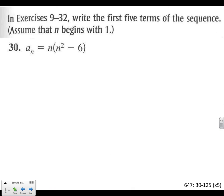Alright, let's go ahead and do the even problems for 9-1's homework. Problem 30: a sub n equals n times n squared minus 6. The first five terms of the sequence. So we're going to plug in 1 for n. 1 times 1 squared minus 6 is equal to 1 times 1 squared is still 1, minus 6 is negative 5, and that's going to be equal to negative 5.